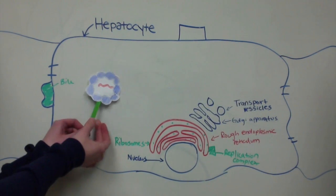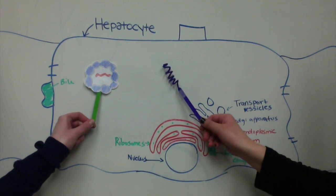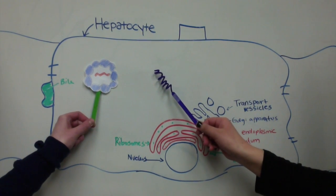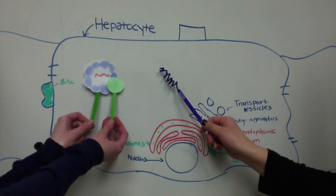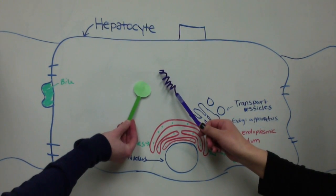The nucleocapsid uncoats and releases the genetic material of the HCV. The HCV, single-stranded RNA positive, is then translated by the host's ribosome to produce polyproteins. These proteins either form structural or non-structural proteins for the HCV.